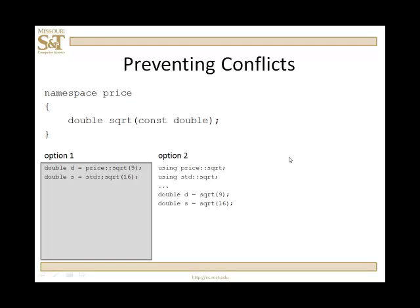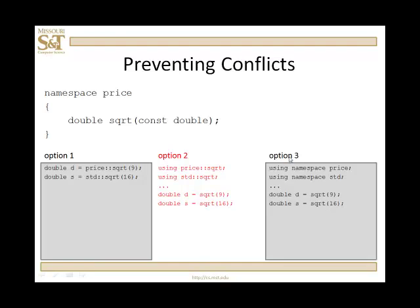Option two: if I say 'using price::square_root' and 'using std::square_root', that's fine until I actually use them. When the compiler sees square_root, it doesn't know which one to use — so that's a problem. Option three: if I say 'using namespace price' and 'using namespace standard', again that's fine until I use a name that is common to both namespaces, like square_root. That is also going to be a problem.